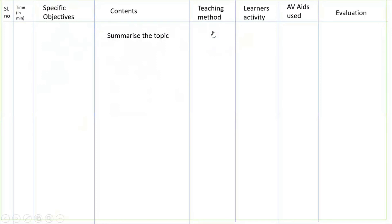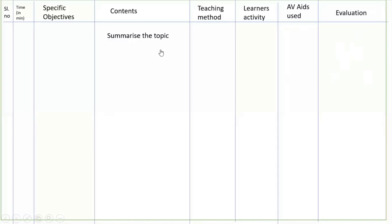In the teaching method column for summary, write: 'Teacher is explaining.' Learner activity: learners are listening. If you used any AV aids in the summary, write that AV aid type. For the evaluation column in the summary row, there is no need to write any evaluation. This is the complete lesson planning format.